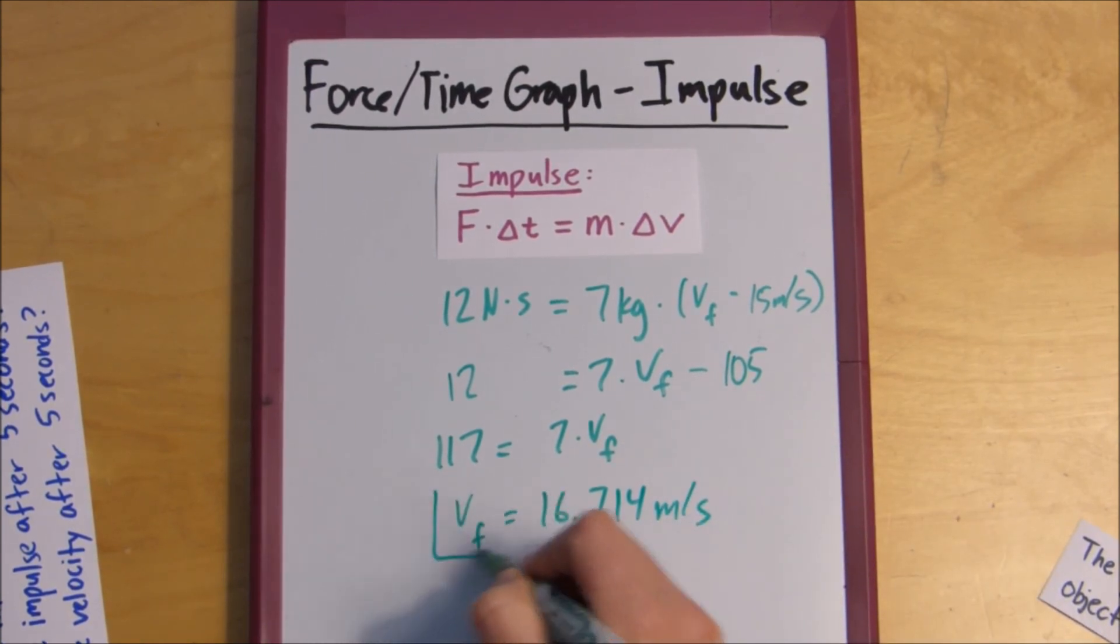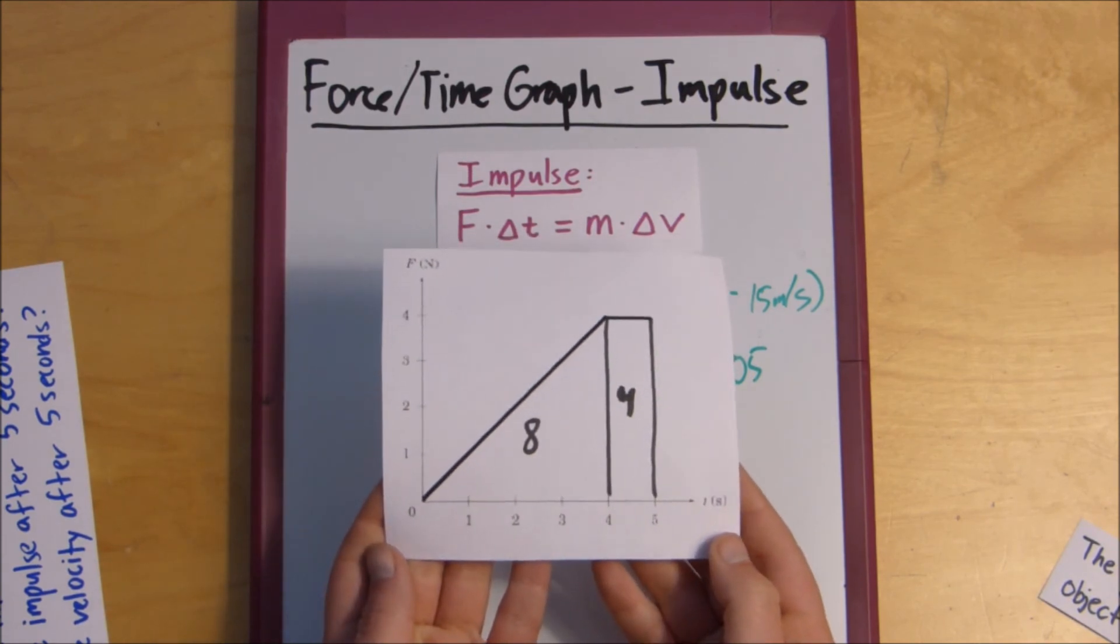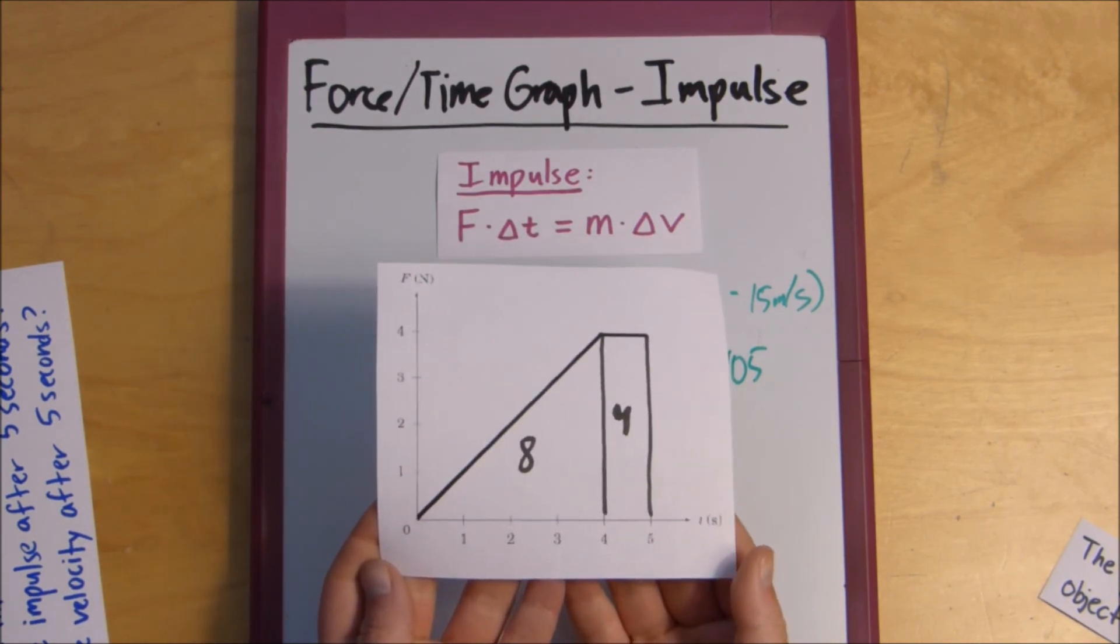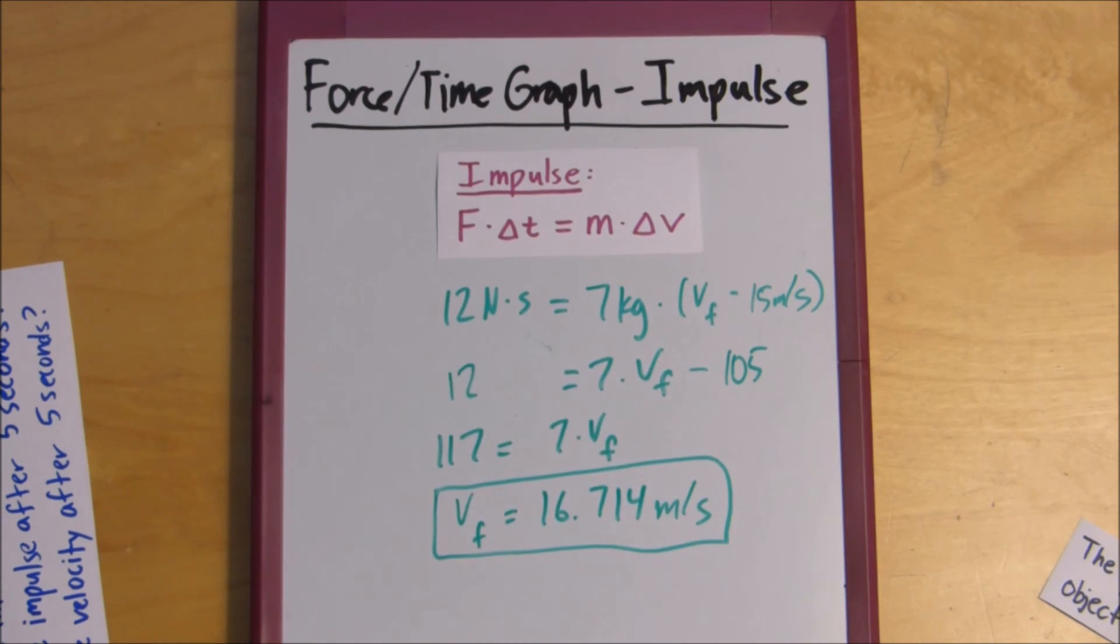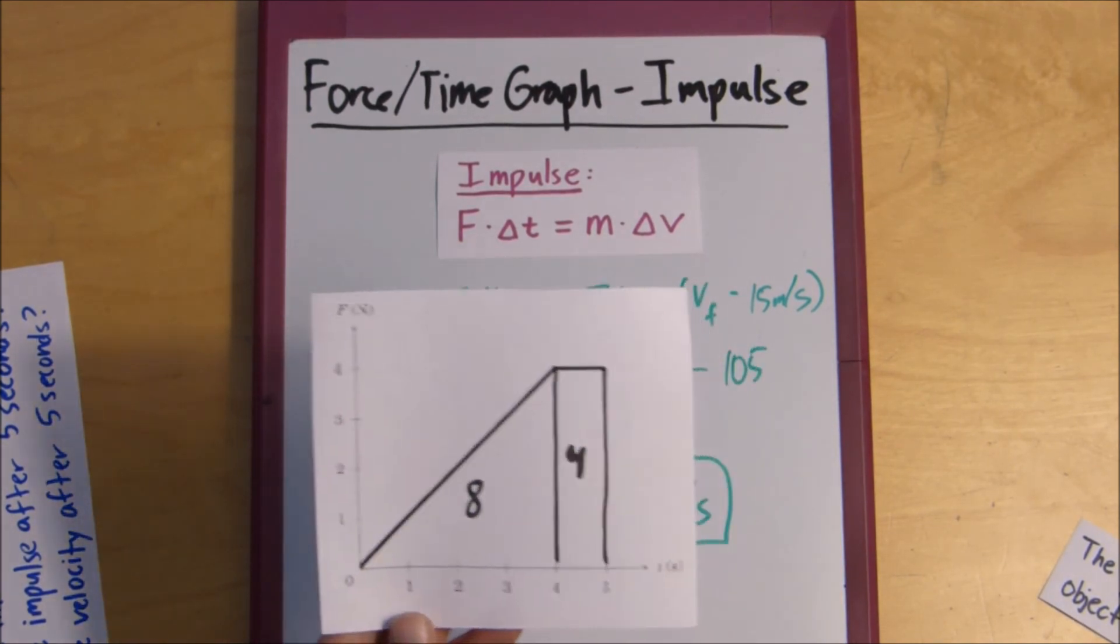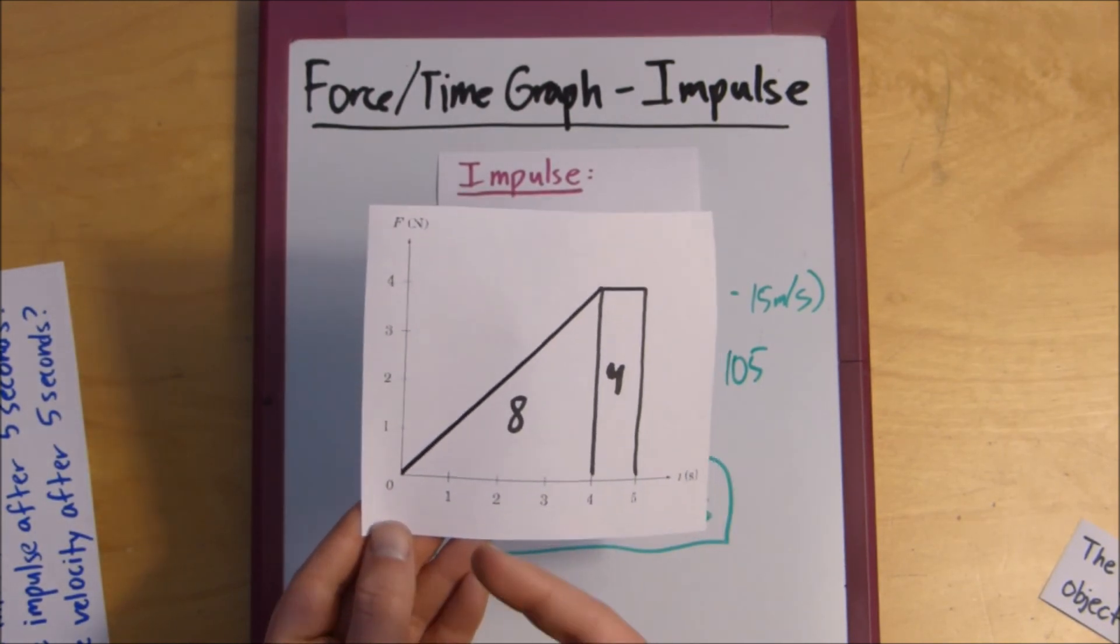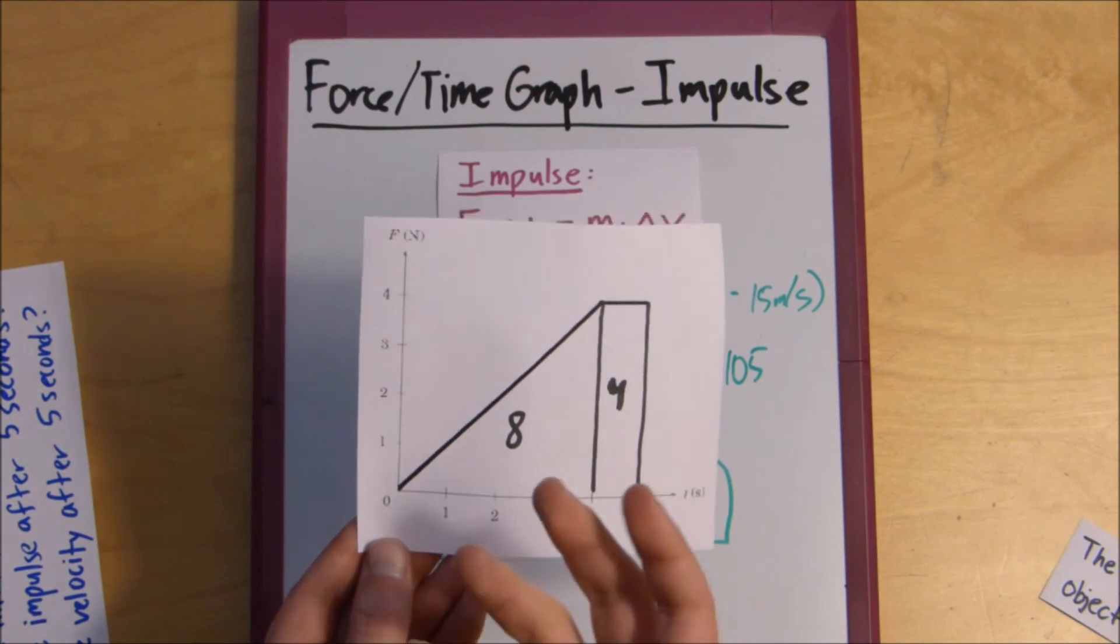And now, the first thing I like to do after I've solved the problem is I like to figure out if this makes sense. So, I look at the impulse, and if the impulse is positive, you know that your velocity should increase. But, if this graph had been below the x-axis, you know that your impulse would be negative, so your velocity would be smaller.